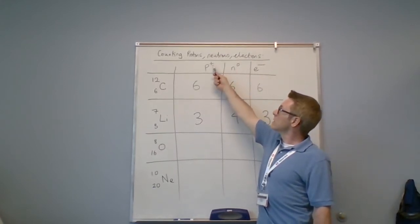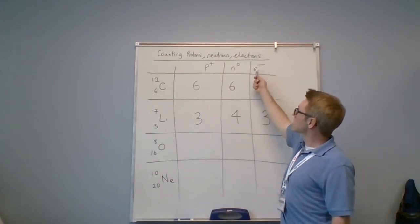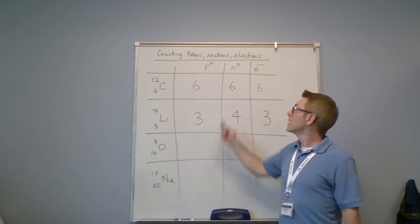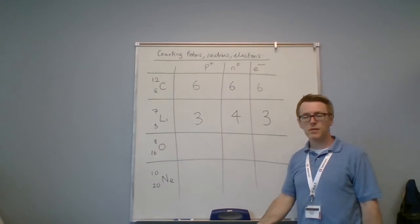Because the protons have a plus charge, the electrons have a negative charge, so having an equal number nets a zero charge. The neutrons have no charge, so we're not interested in how many of them we have—they don't affect the charge.